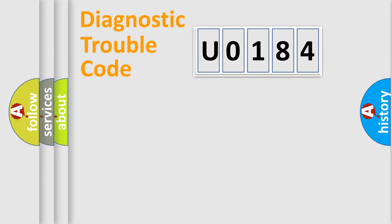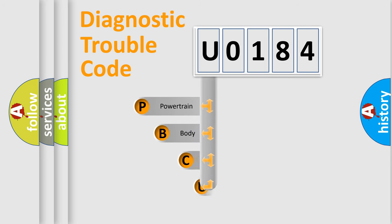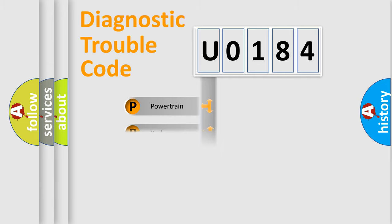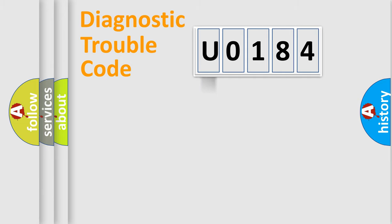Let's do this. First, let's look at the history of diagnostic fault code composition according to the OBD2 protocol, which is unified for all automakers since 2000. We divide the electric system of automobile into the four basic units: Powertrain, Body, Chassis, and Network.